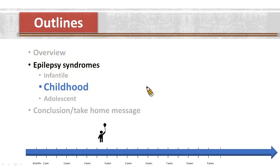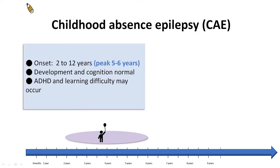Now moving on to childhood onset epilepsy syndromes, I will introduce four examples of epilepsy syndromes. Childhood Absence Epilepsy (CAE): this syndrome is characterized by onset of frequent absence seizures between the ages of 2 to 12 years, which peaks at the age of 5 to 6 years. Development and cognition are typically normal.